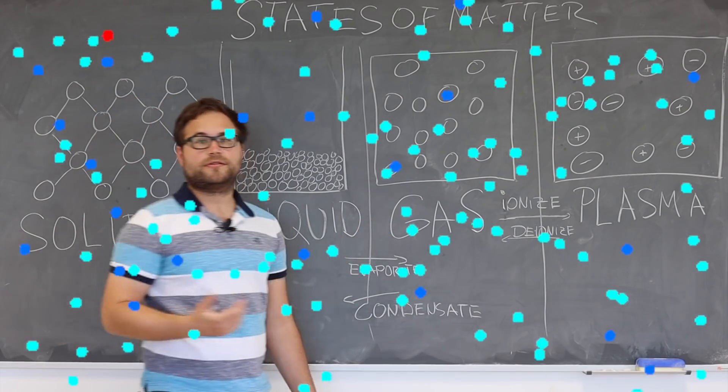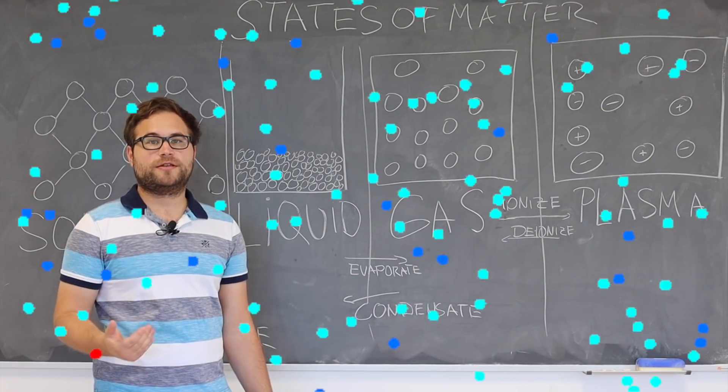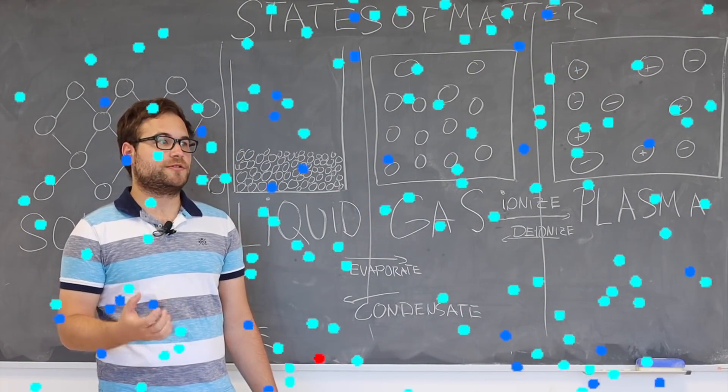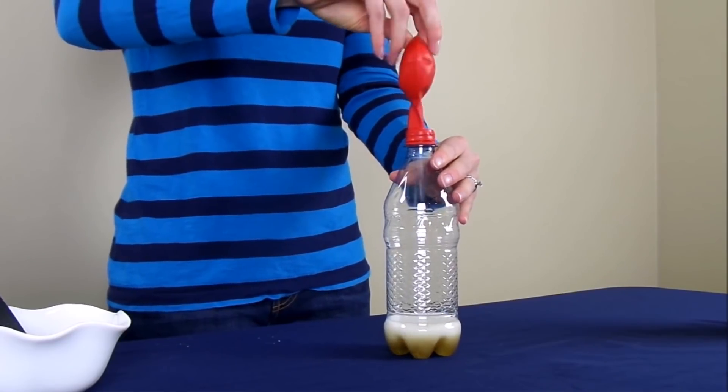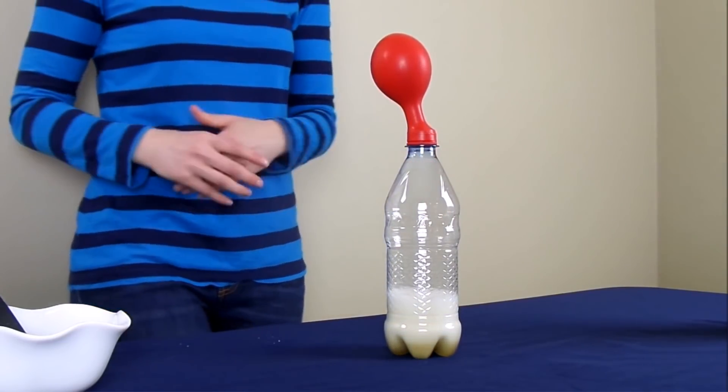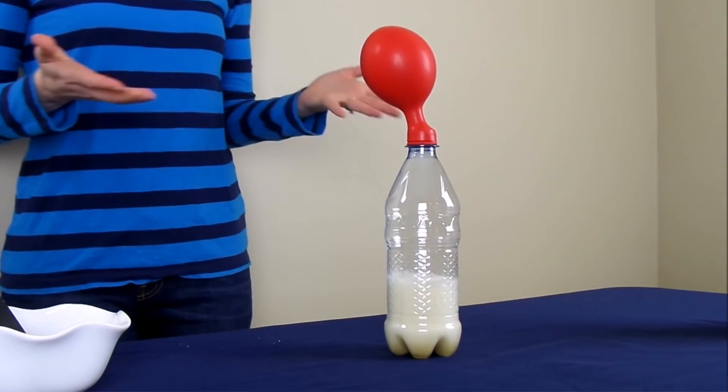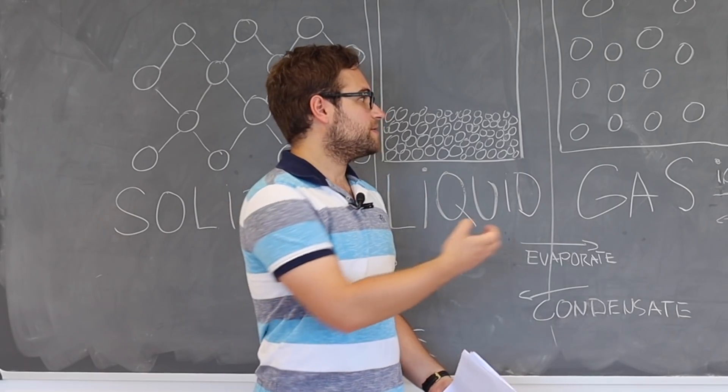In contrast, in a gas the interactions are so weak that the molecules move mostly freely. If you put a gas into a container it will expand and fill out the whole volume and shape, so a gas itself doesn't have a definite volume and doesn't have a fixed shape.